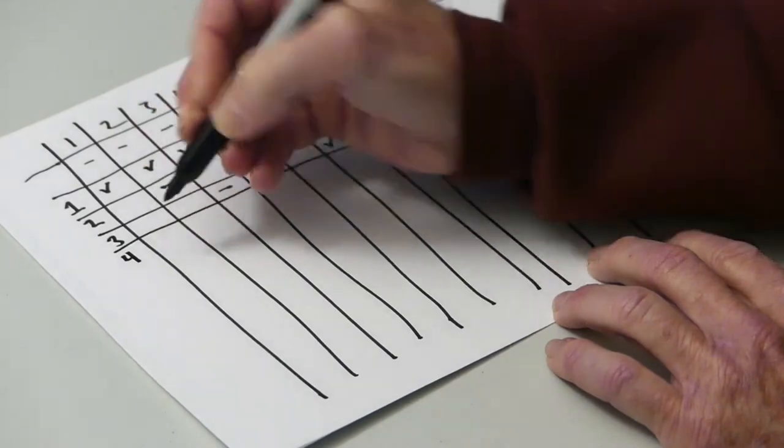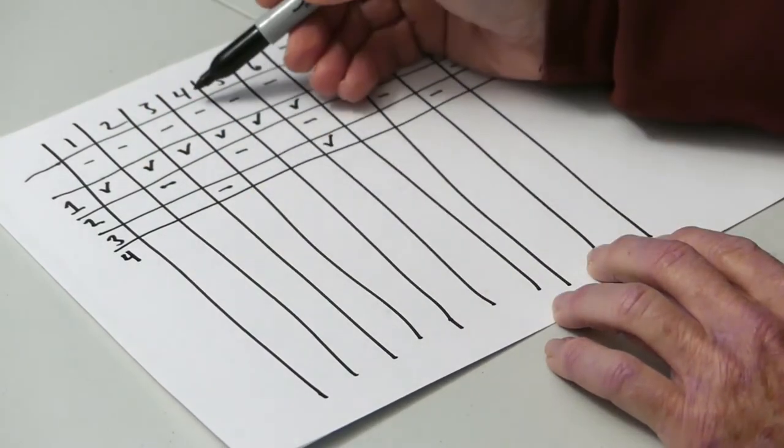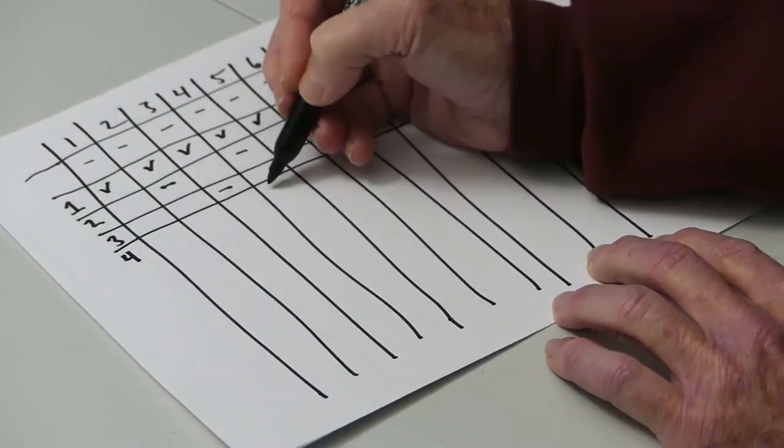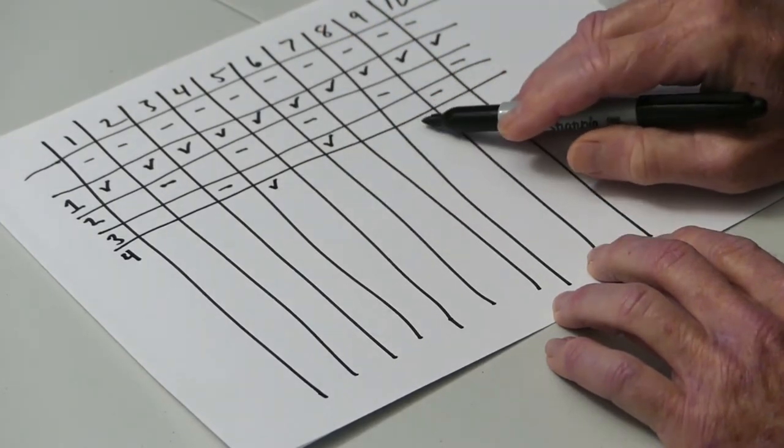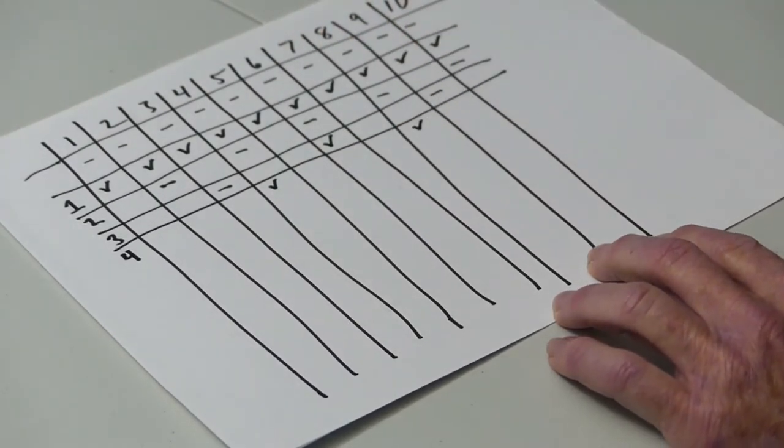Here comes student number 4. Student number 4 starts at locker number 4 and opens it. 4 plus 4 is 8, and that gets opened.